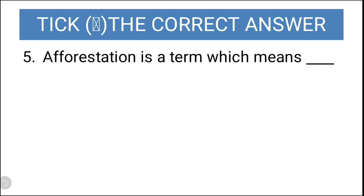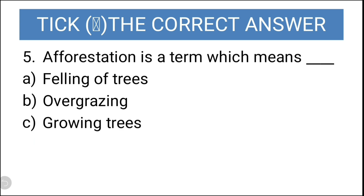Fifth question: afforestation is a term which means — felling of trees, overgrazing, growing trees, or making dams? The correct answer is growing trees.